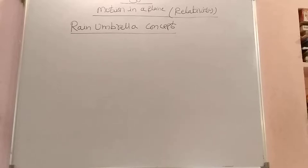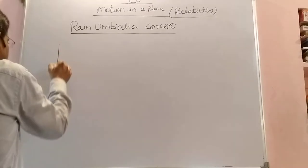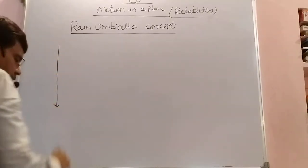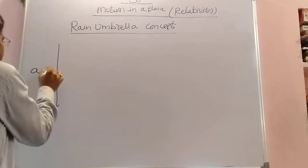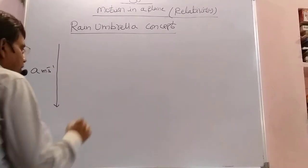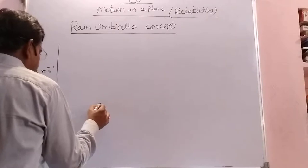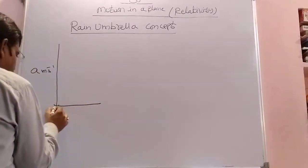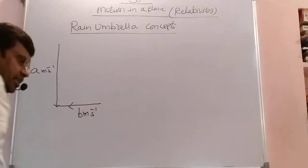Now, we are discussing about the rain-umbrella concept. In this, for example, rain is falling vertically downward with a velocity of 'a' meters per second. Similarly, one man is travelling towards west with a velocity of 'b' meters per second.